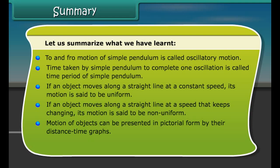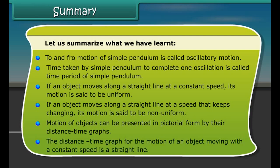Let us summarize what we have learned. The to-and-fro motion of a simple pendulum is called oscillatory motion. The time taken by a simple pendulum to complete one oscillation is called its time period. If an object moves along a straight line at a constant speed, its motion is uniform. If an object moves along a straight line at a speed that keeps changing, its motion is non-uniform. Motion of objects can be presented in pictorial form by a distance-time graph. The distance-time graph for an object moving at constant speed is a straight line.